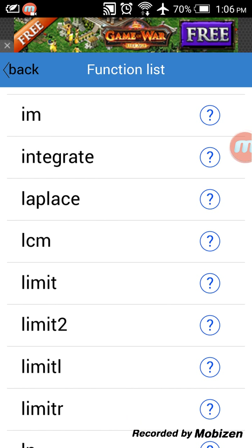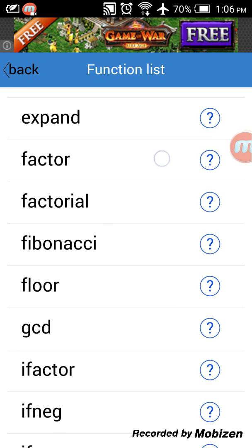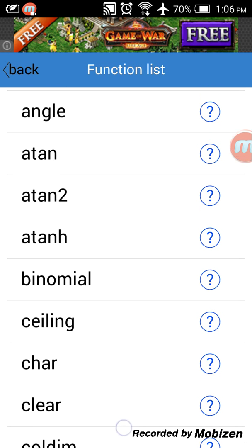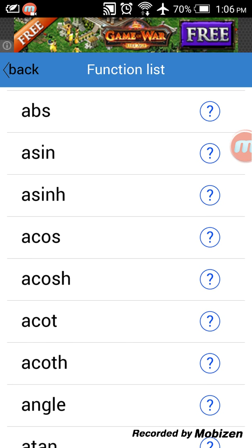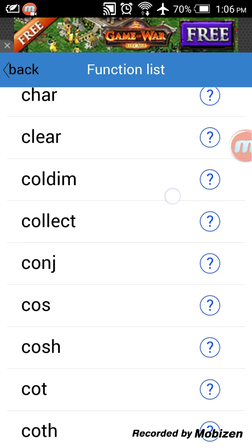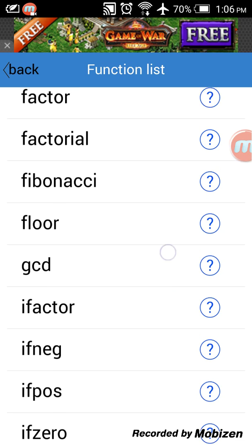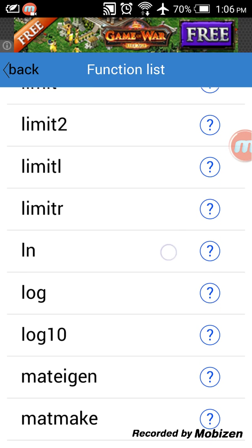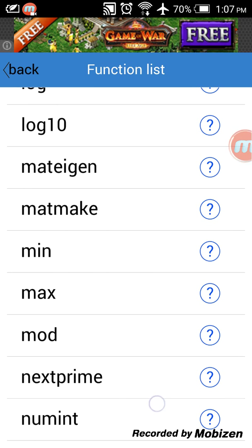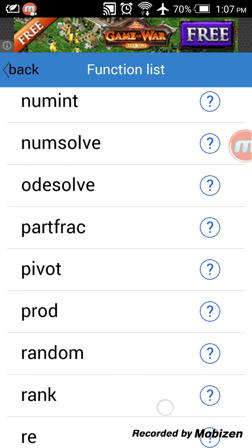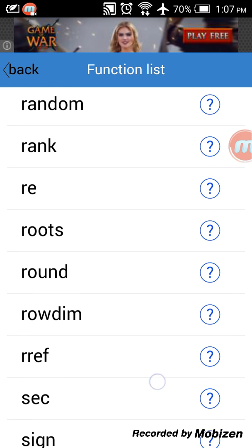We can try to use one of these functions. Let's see the roots. So it tells you that you just type roots and then in parentheses you put the formula x²+x-6 and you solve for x.